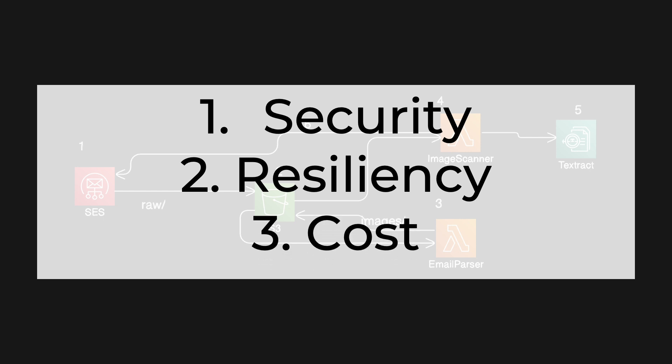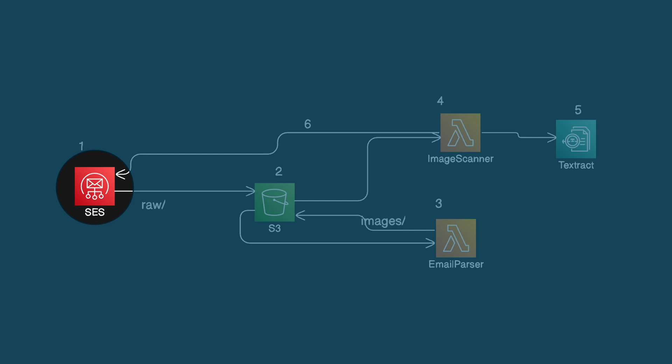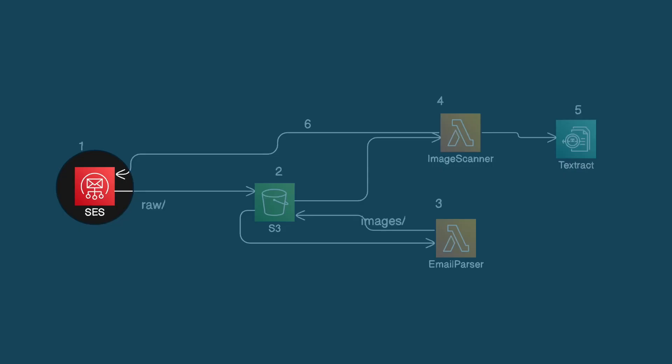Starting with SES: can I increase security? Not that I can see — I don't really have any options to restrict incoming email from certain addresses, but let me know if you know otherwise. Since SES is the only external-facing component, it was the only one I looked at from a security perspective. Can I increase resiliency? SES is already a serverless email service and there's nothing I can do to ensure it stays up — that's all on AWS.